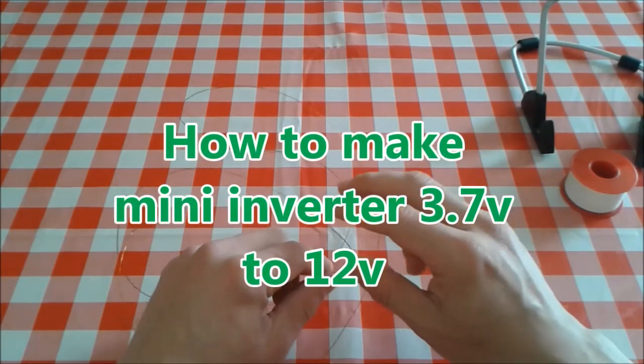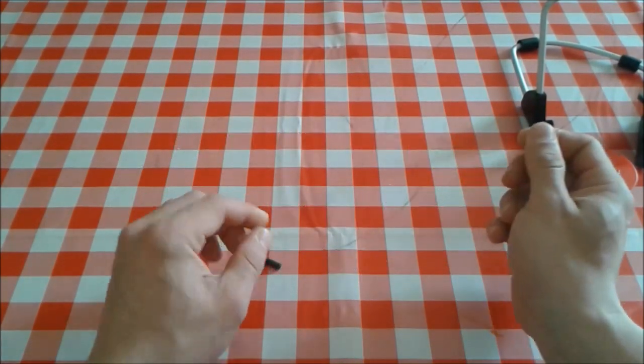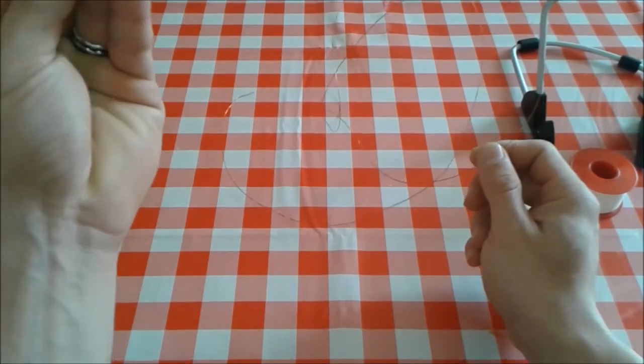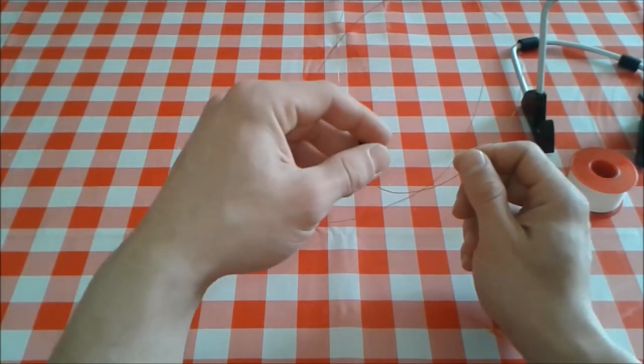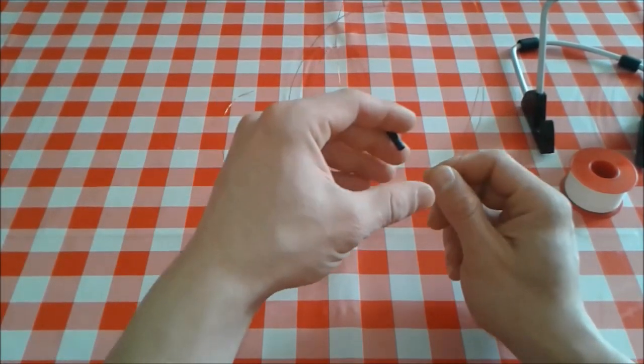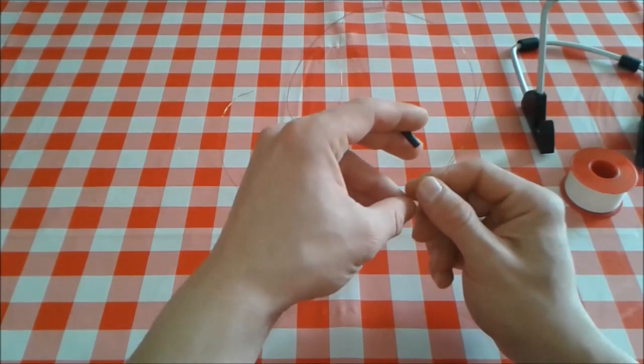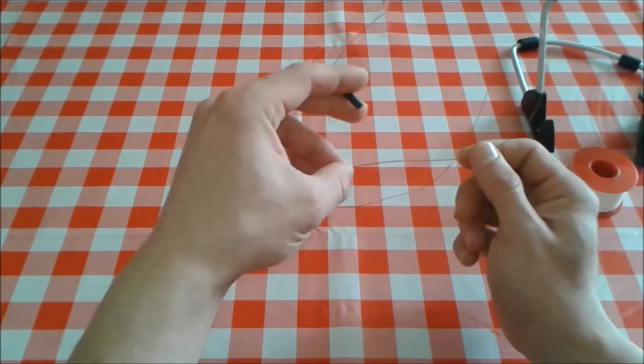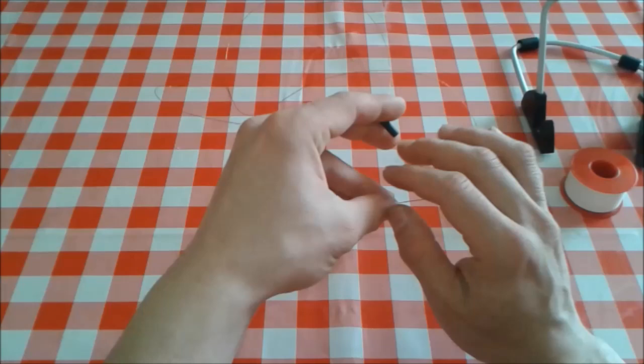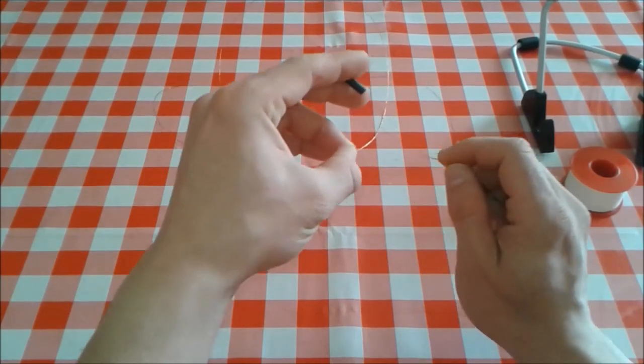Hi everybody! I'm gonna present you today how to make an inverter from a lithium-ion battery 18650, so from 3.7 volts to let's say 20 volts. We're gonna try to make it higher.